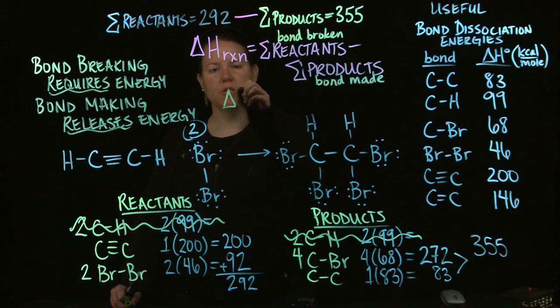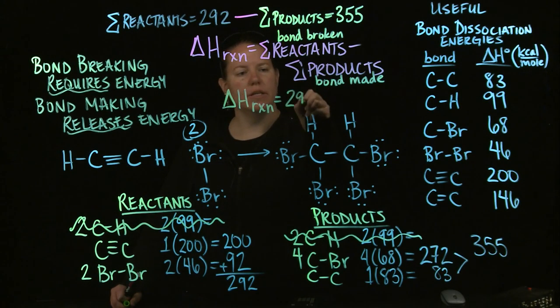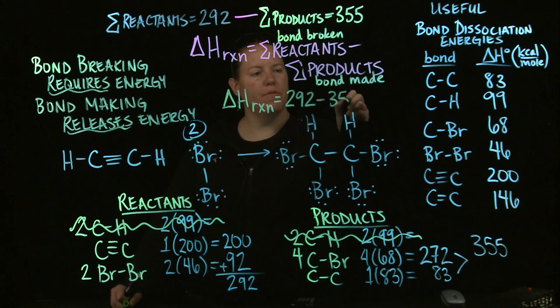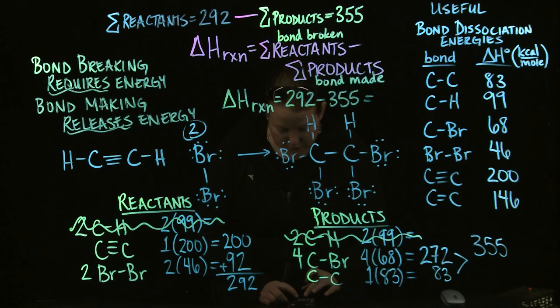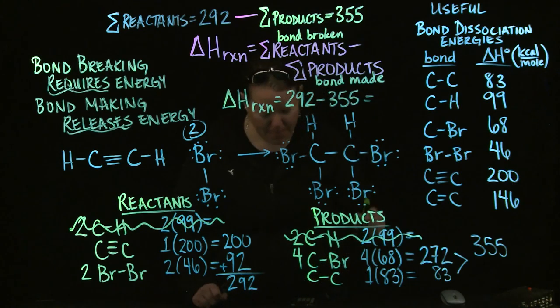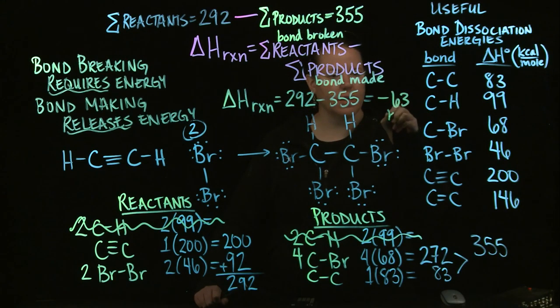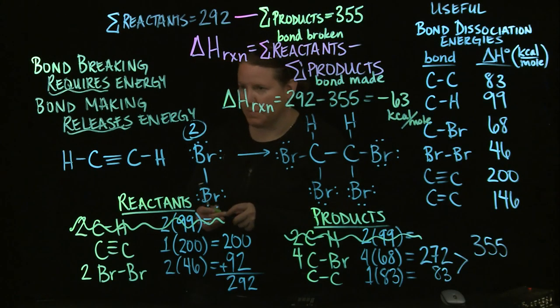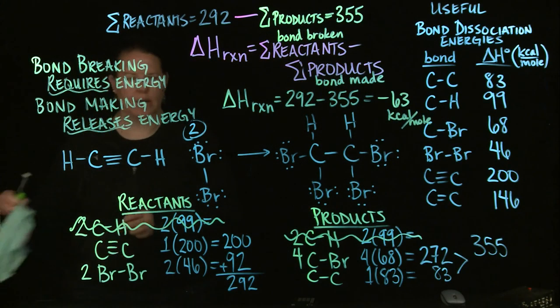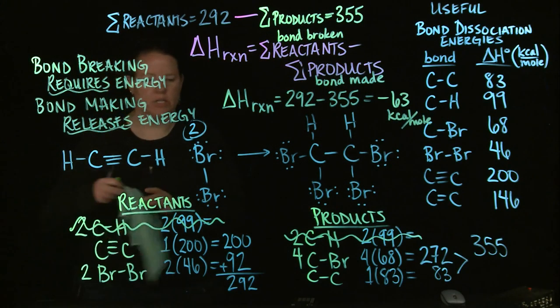Okay. So, my last step here, my delta H of reaction is going to be 292 minus 355, which indeed will show this as an exothermic process, which is a good thing. And I get negative 63 kilocalories per mole in the end. If you ever have calories, by the way, and you're like, well, actually, I kind of need kilojoules per mole because that's what I need.